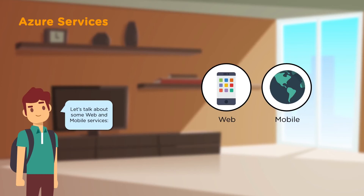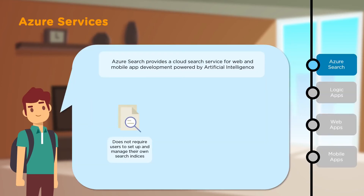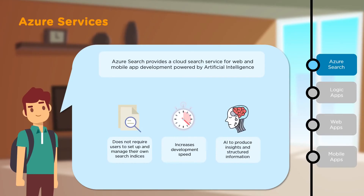Next, let's look at some web and mobile services. First, we have Azure Search — a cloud search service powered by artificial intelligence. With it, you can develop web and mobile applications. One big advantage is that you don't have to set up or manage your search indices; Azure takes care of that, increasing your development speed. The artificial intelligence also provides insights and structured information to help improve your search experience.